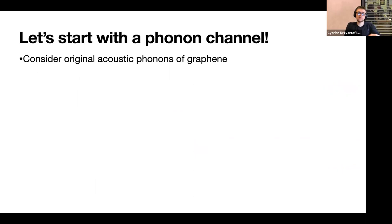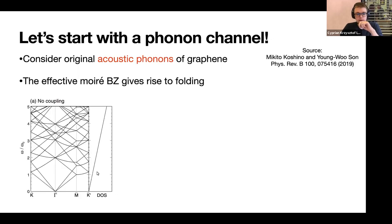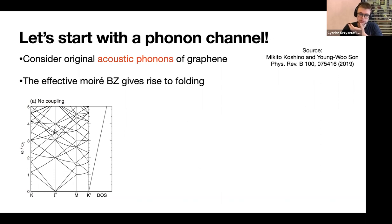Let us begin with the phonon channel. I consider only the pairing coming from acoustic phonons of graphene, because optical phonons appear at frequencies around 150-200 meV — which corresponds to around 200 Kelvin — so they're not important for our characteristic frequencies. Because of the moiré Brillouin zone, the phonon dispersion will be folded back. There will be gaps opened in the spectrum due to interlayer coupling between the two layers, as analyzed in prior work.